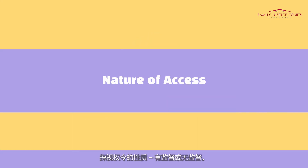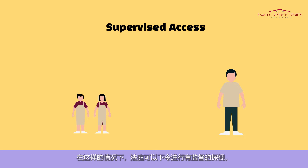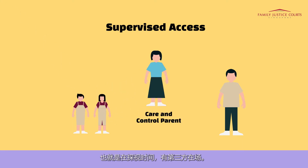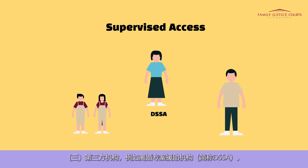The nature of access orders — supervised or unsupervised. When making such orders, the court, in considering the best interests of the child, may determine that access take place in a more gradual fashion. In such a situation, the court may order supervised access, being access where a third party is present during the access time. This third party may either be: 1) the care and control parent; 2) another family member or other prescribed person, including a domestic helper; or 3) a third party agency such as a Divorce Support Specialist Agency, or DSSA.